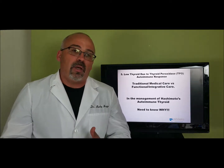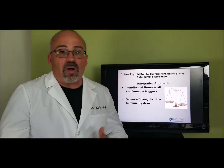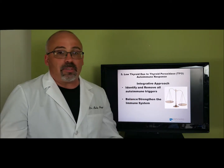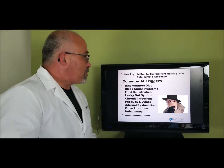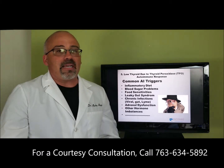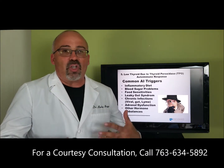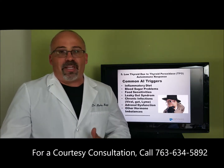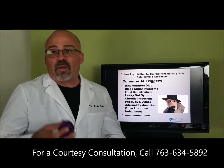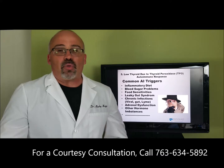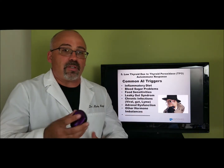With an integrated approach, we want to identify and remove all the triggers and balance and strengthen the immune system — a whole body approach asking why and addressing that why. Common autoimmune triggers include an inflammatory diet. The American diet is highly inflammatory — bad fats, highly processed foods that create inflammation. In literature, systemic inflammation is an underlying cause of just about any health condition. Blood sugar problems are another trigger: when insulin or cortisol goes up, those are very inflammatory hormones that increase the inflammatory response, throw off the immune system, and cause it to work poorly.